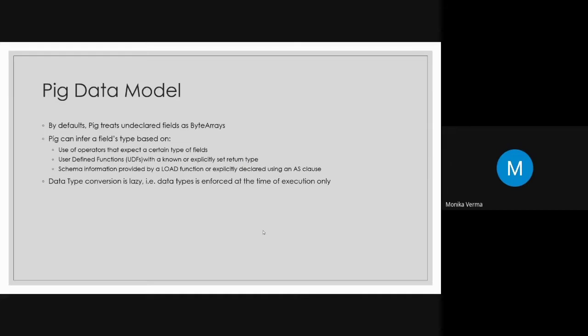Pig can infer a field's type based on use of an operator that expects a certain type. Some operators may not support certain types. It depends on the type conversion. Lazy type conversion happens here. User defined functions (UDFs) with a known or explicitly set return type also determine the field type.